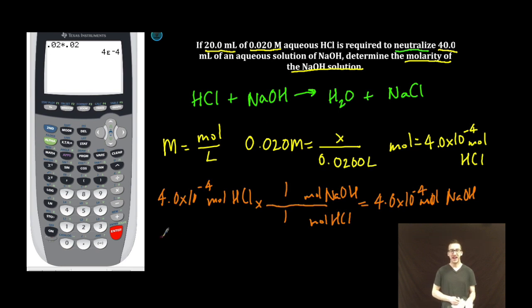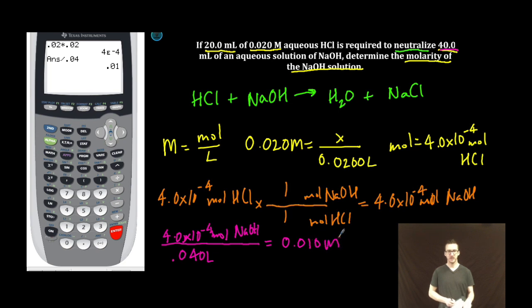And then finally, if I know that I reacted 4.0 times 10 to the minus 4 moles of sodium hydroxide, and that was in 40 milliliters of solution, or 0.040 liters of solution, the concentration is simply a quick division. And so the concentration of my sodium hydroxide solution is 0.010 molar. Boom!